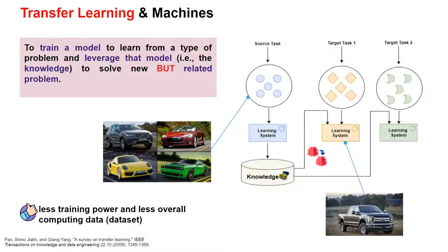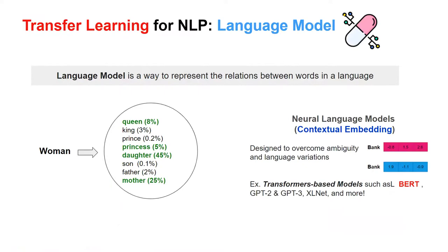The same concept applies to machines. The goal is to train a model on one type of problem and leverage that knowledge to solve a new but related problem. For example, a model trained to recognize small cars can be reused to recognize trucks. With transfer learning using pre-trained models, we save time from building models from scratch and no longer need to collect or label large datasets. Transfer learning in the form of pre-trained language models has contributed greatly to the state of the art across a wide range of NLP tasks.